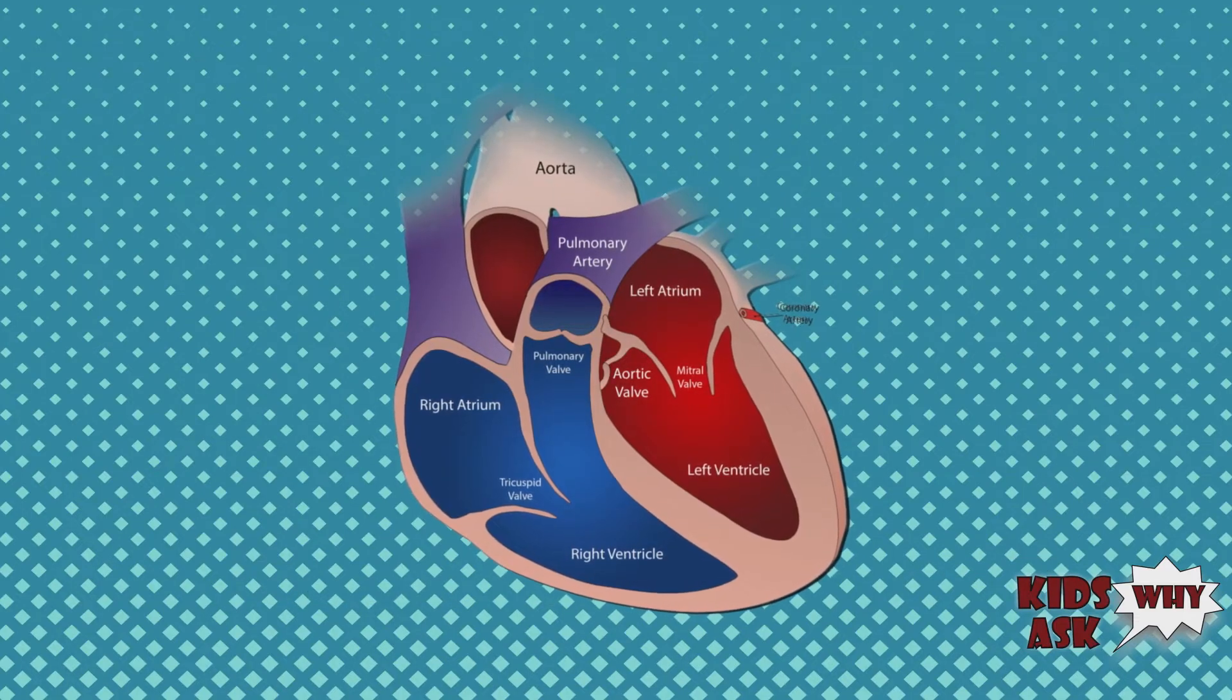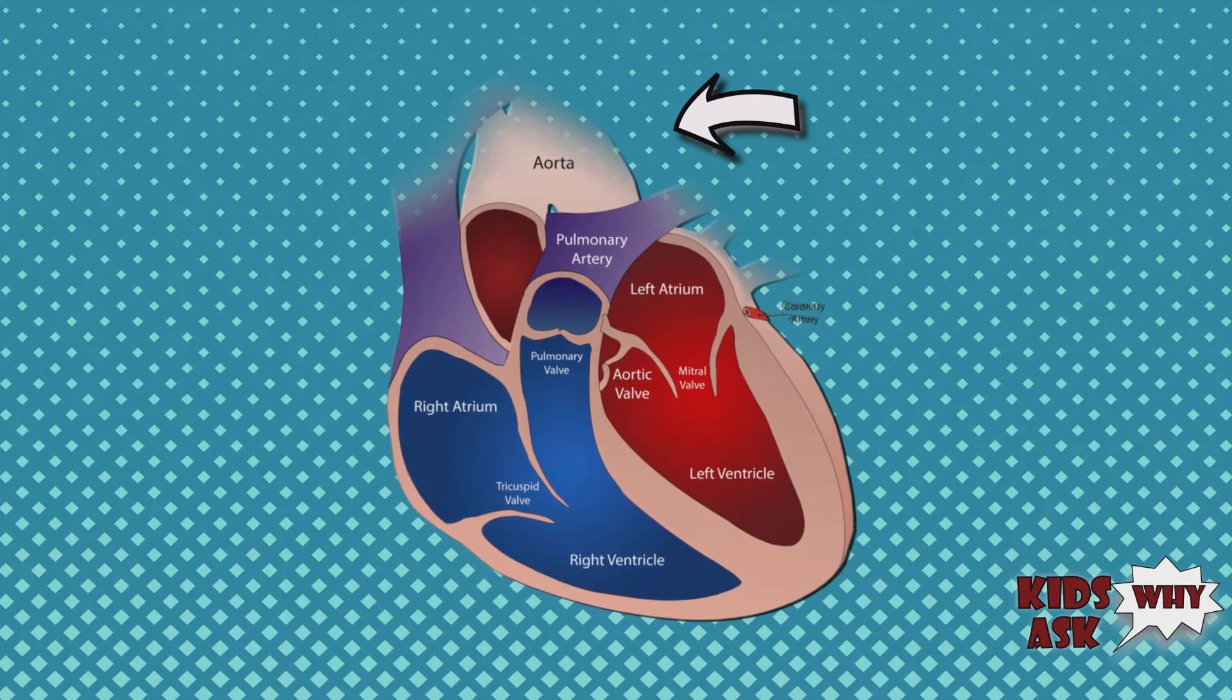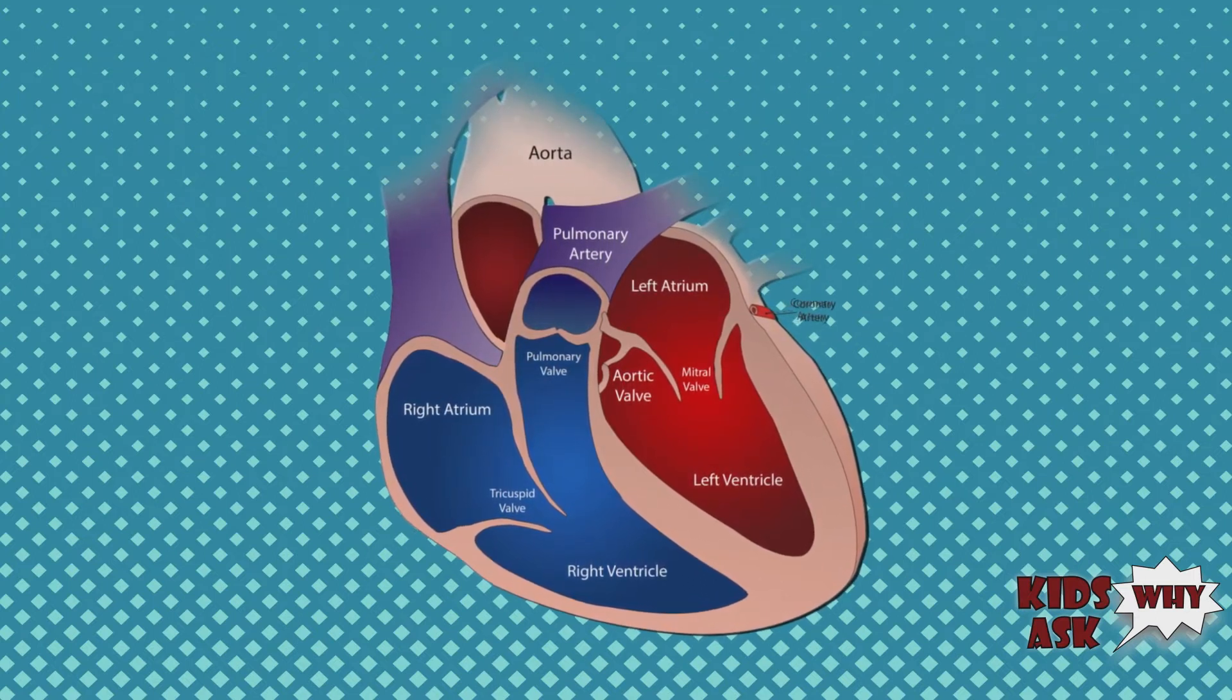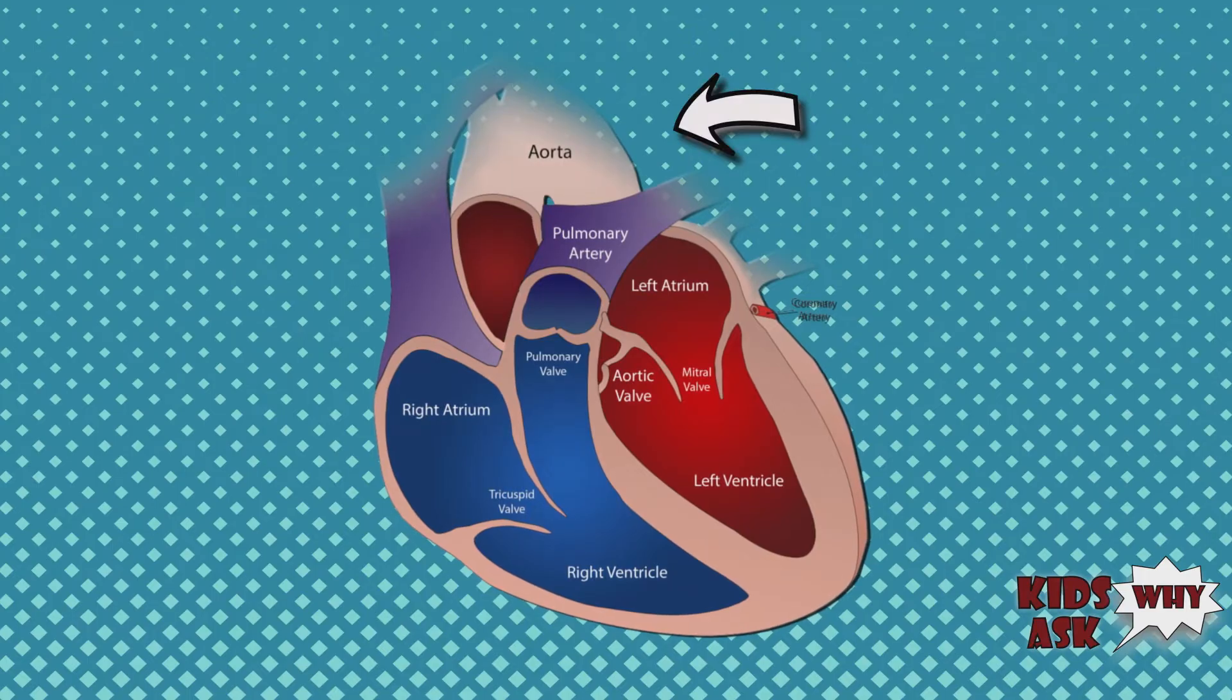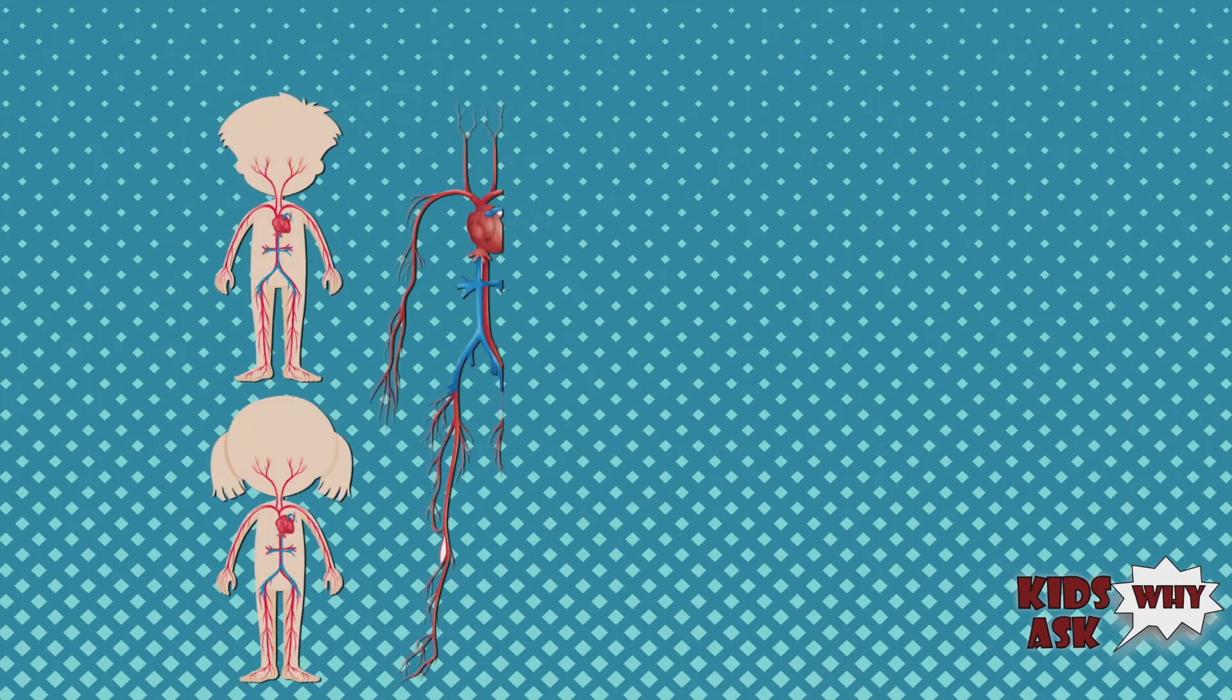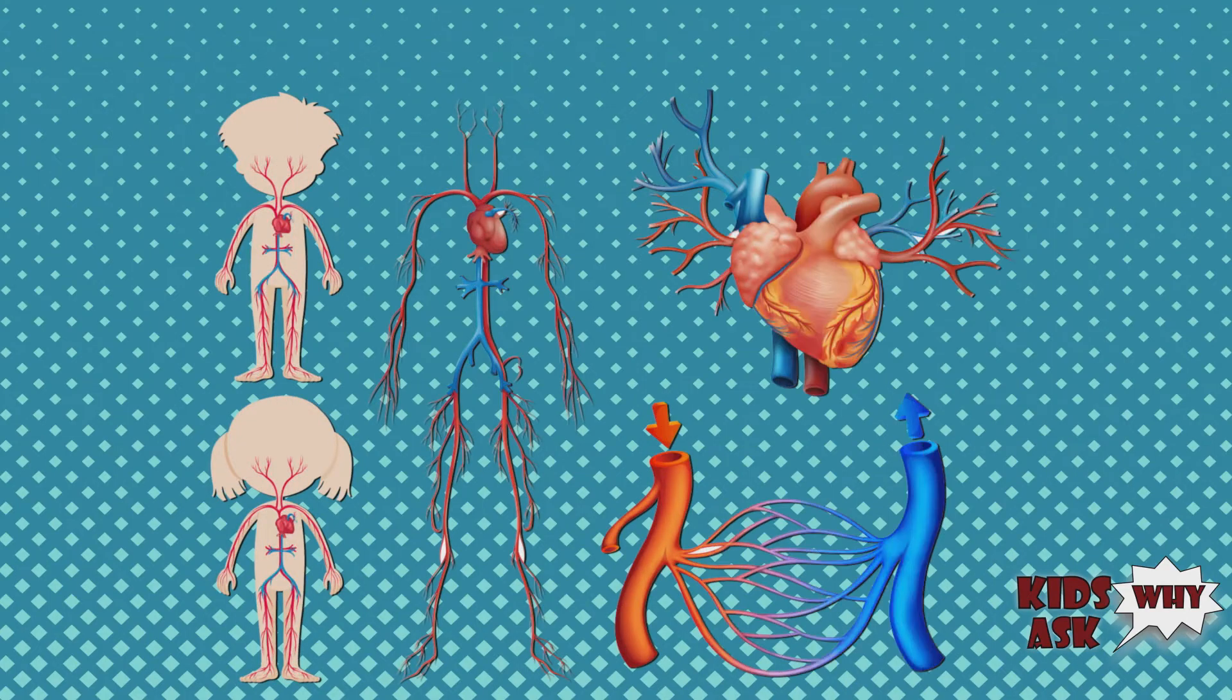Blood flows through one main artery called the aorta. The muscular walls of the aorta and the other arteries help the heart pump blood. When the heart beats, arteries expand as they fill with blood. When the heart relaxes, the arteries contract. It's this rhythm between the heart and the arteries that powers your circulation system and keeps your blood flowing.